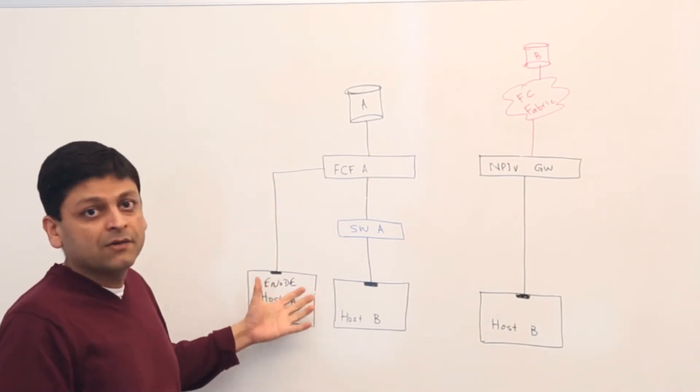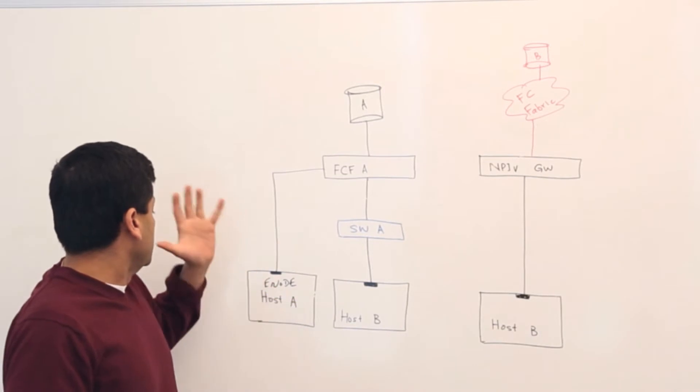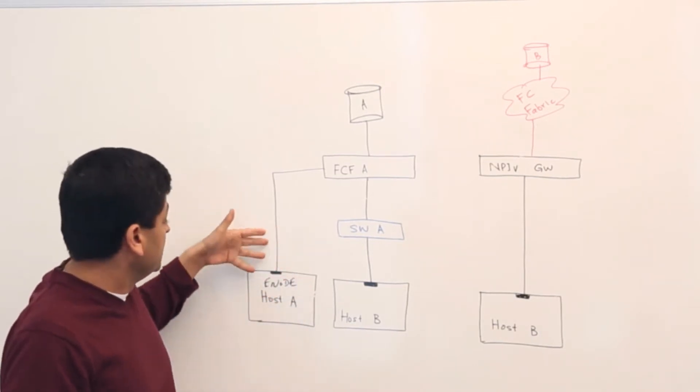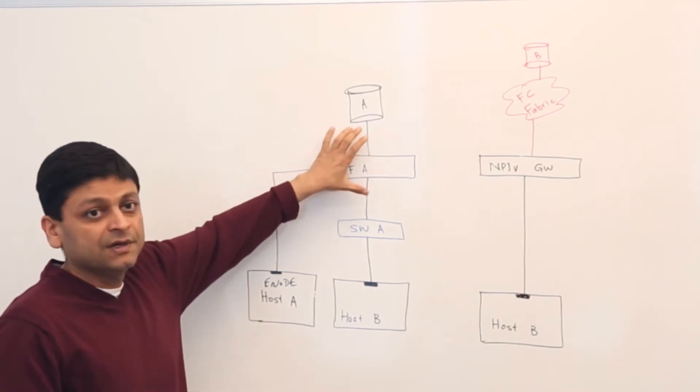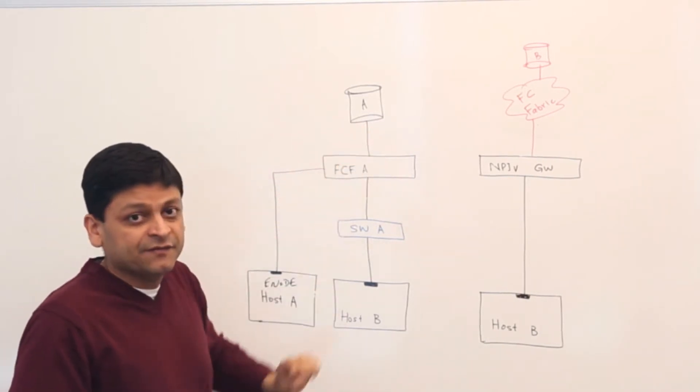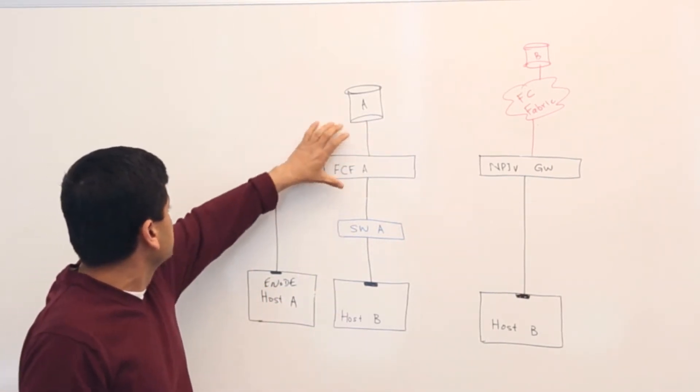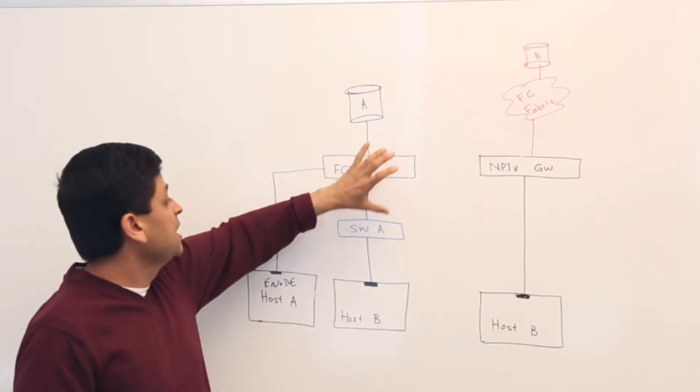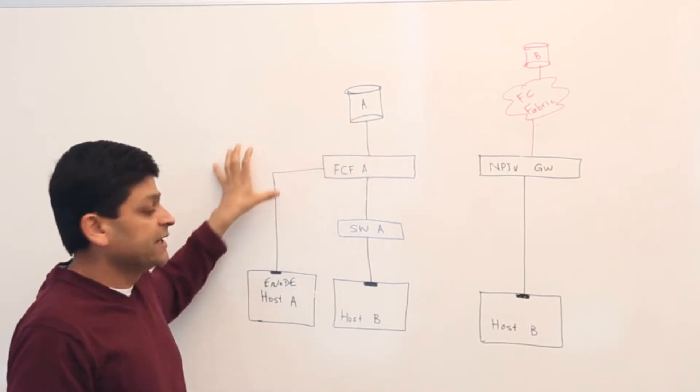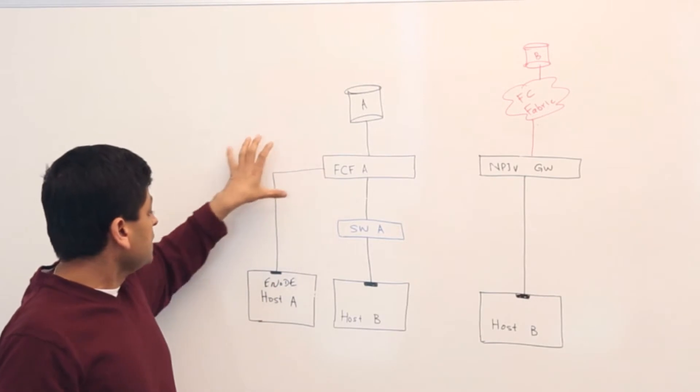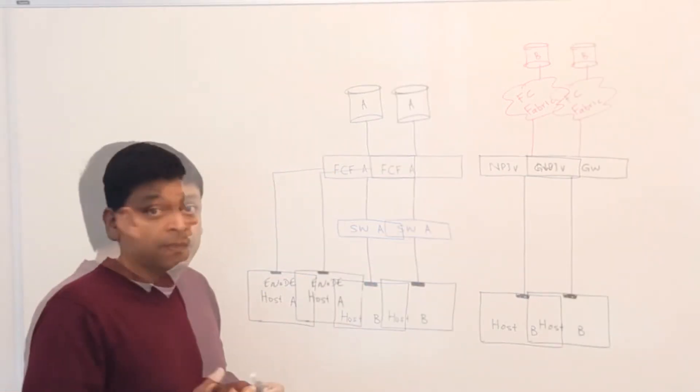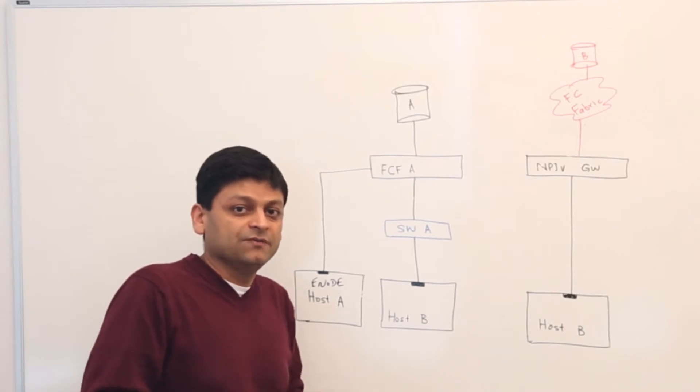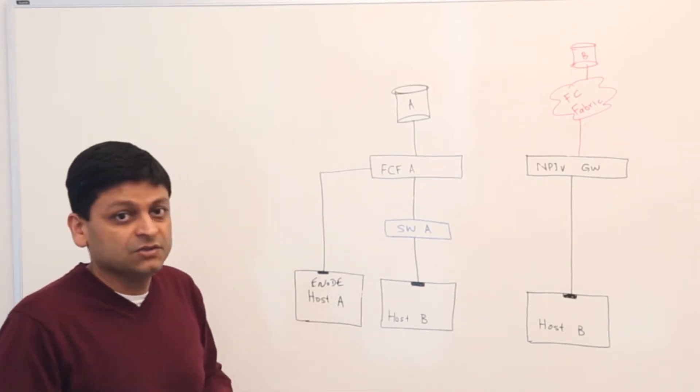So whenever you power on or when the link goes online, this host will try to discover this FCF. At the same time when this FCF comes online it will try to advertise in this network about itself, and this is what we call FCoE initialization protocol which many times is referred to as FIP.